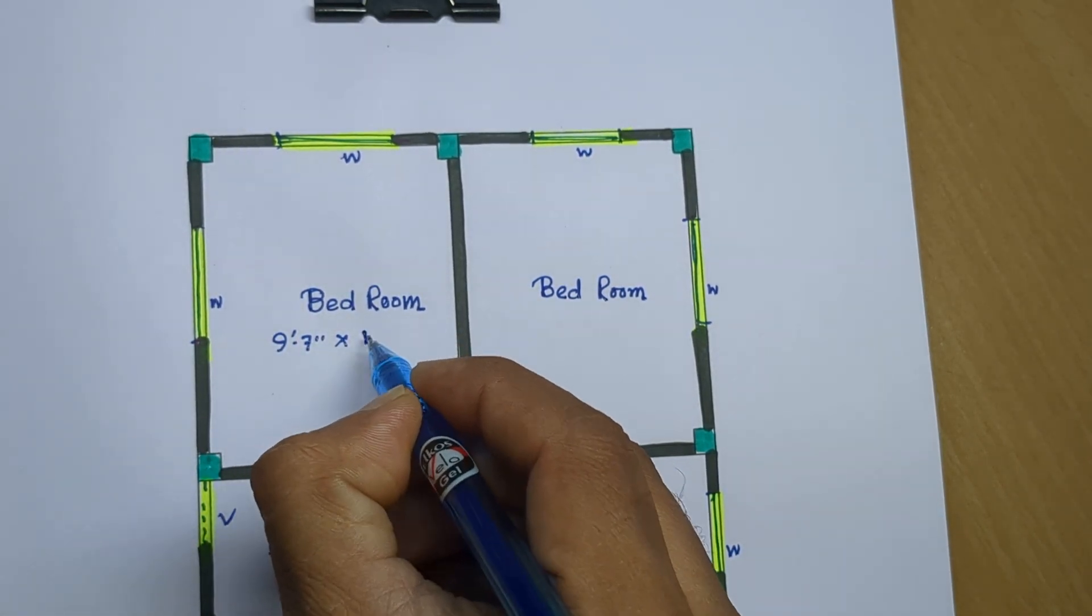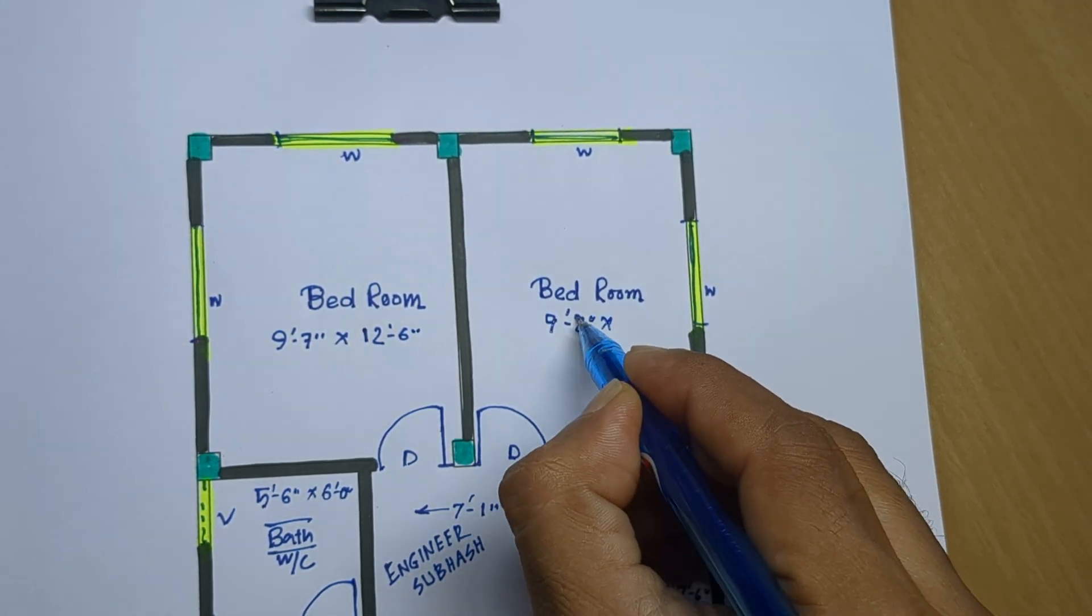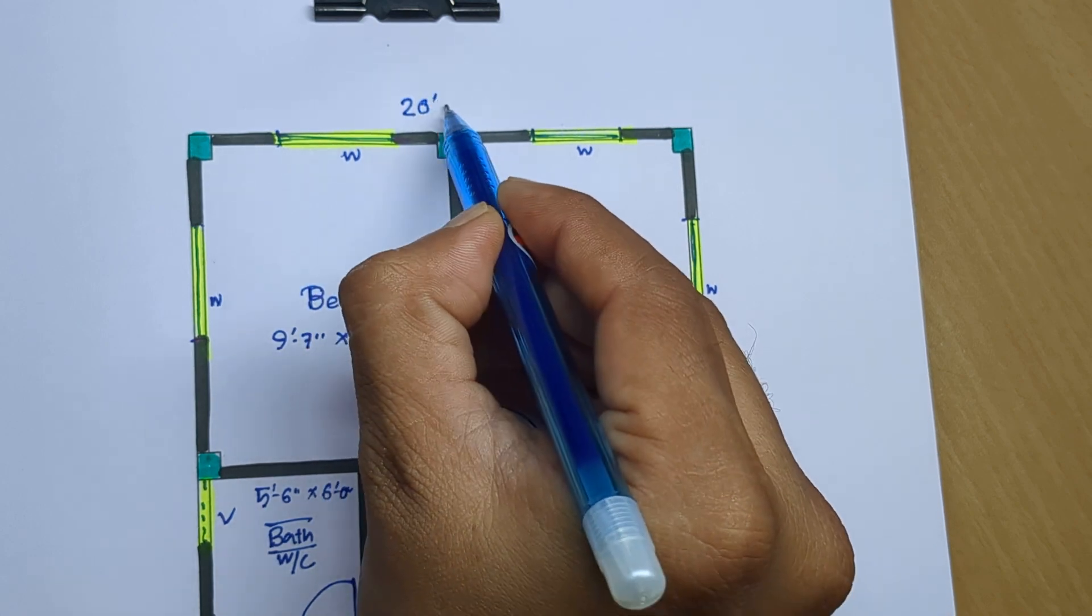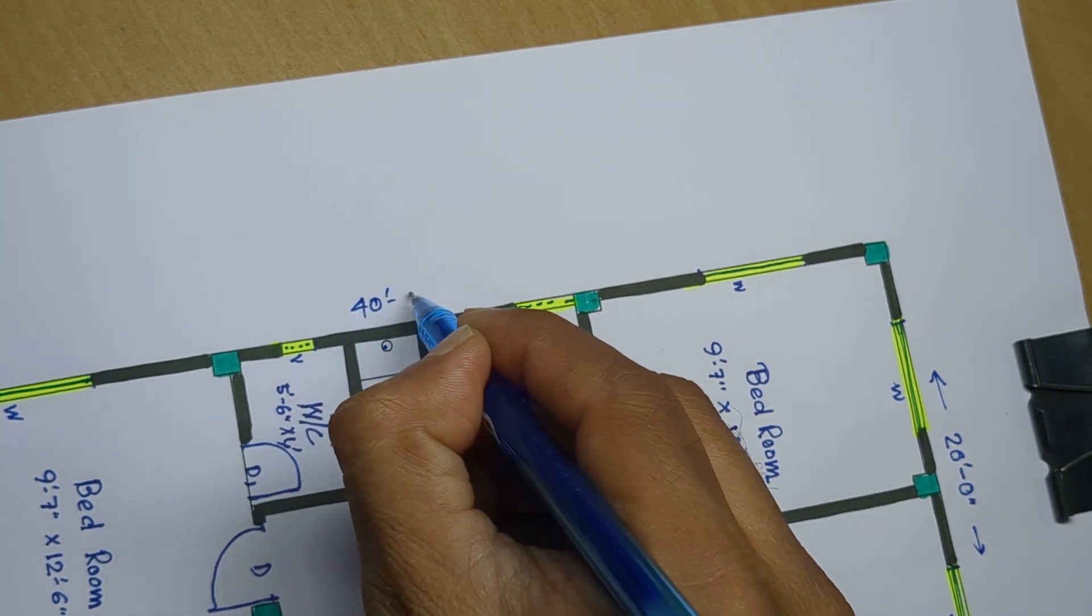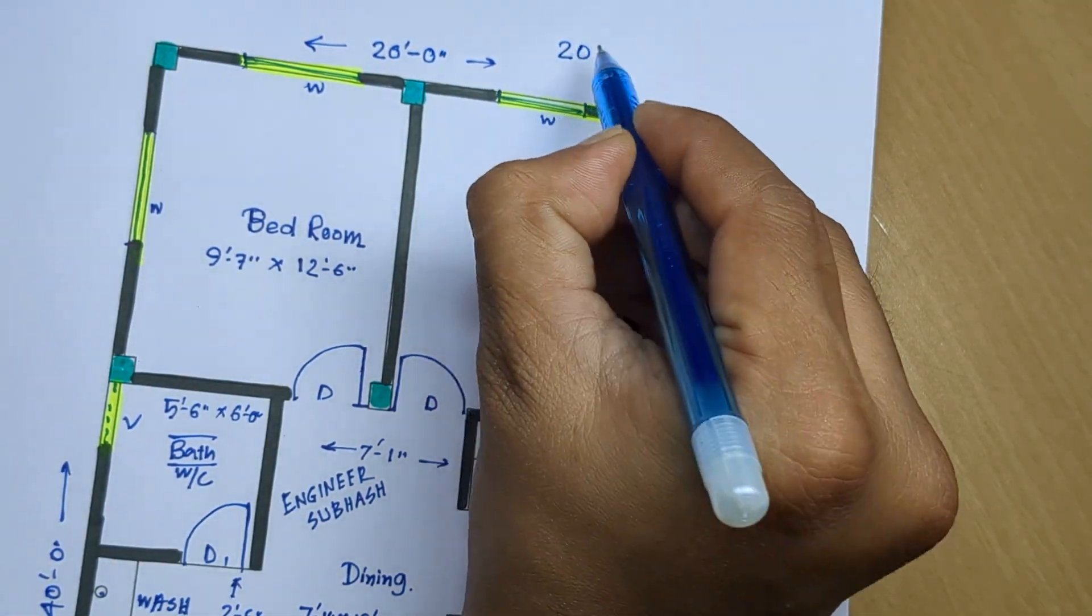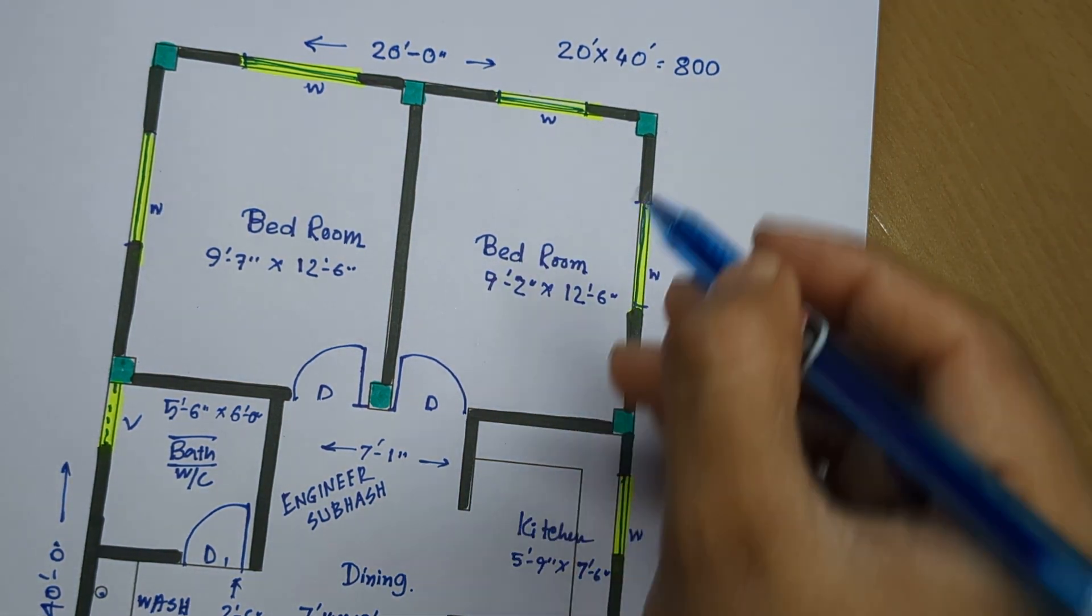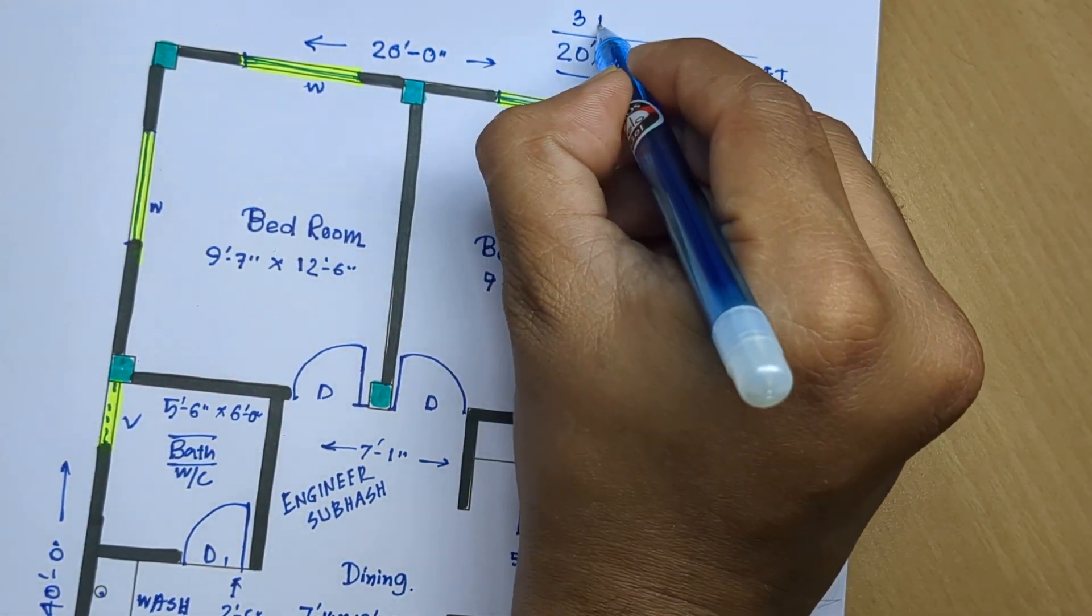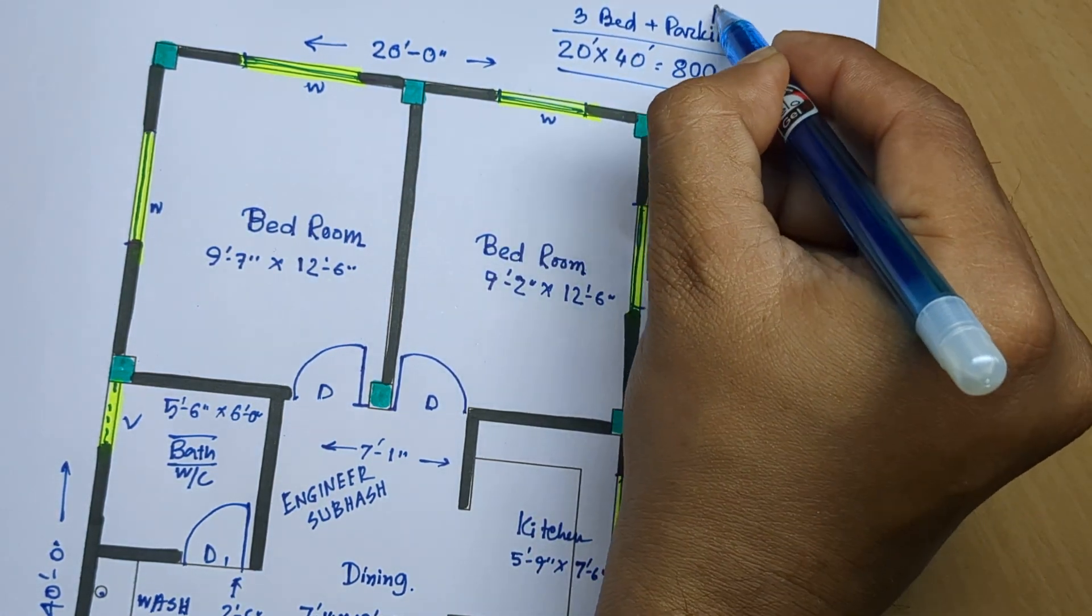9 feet 7 inch and 12 feet 6 inch, 9 feet 2 inch by 12 feet 6 inch, 20 by 40 feet, 20 to 40, 800 square feet 3 bed plus parking bike parking.